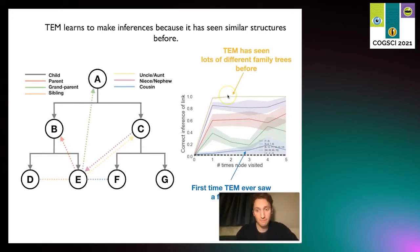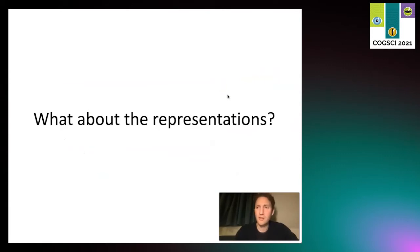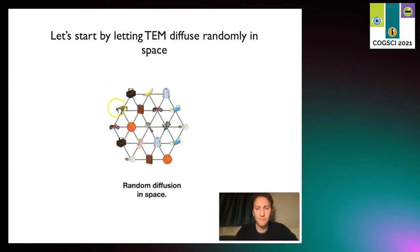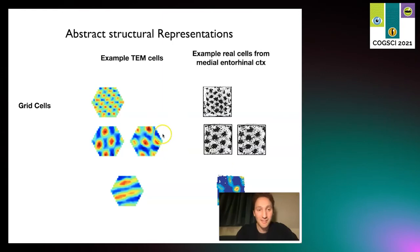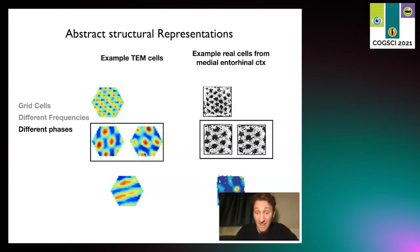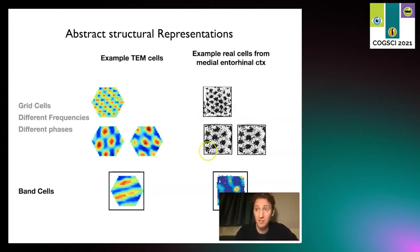That's all nice, so it seems to work. But let's have a look at what representations this model learns. First we're just going to let it randomly wander around some space. The spaces we're using are much bigger than this one, it's just a small one to show you roughly what it would look like. What we see are things that look like grid cells, and when those grid cells come in different frequencies, they come in different phases. Then we also see band cells - these are all things we see in rodent entorhinal cortex.